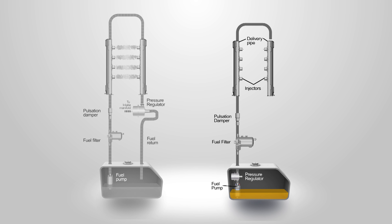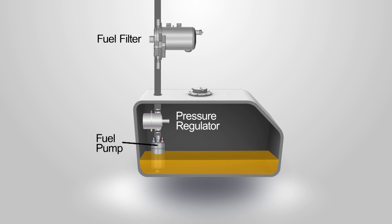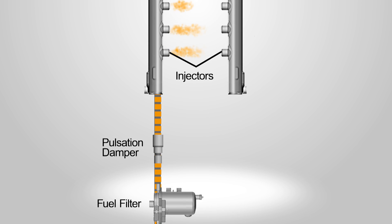Newer systems are returnless types. The pressure regulator is built into, or very close to the fuel tank. Fuel pressure and flow is controlled at the start of the journey.